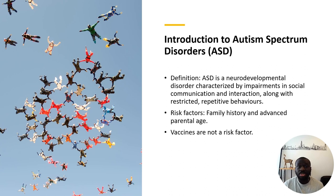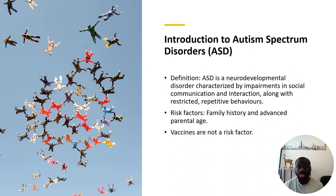What are the factors that increase a person's risk of developing autism? Autism can happen randomly or sporadically, which means anyone can have it. But there are some things that increase your risk, like having a family history — a family member who has had autism or other neurodevelopmental challenges could increase a person's risk. Advanced parental age can also play a role.